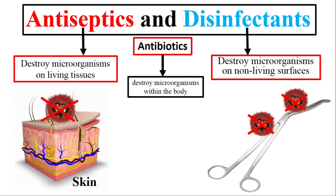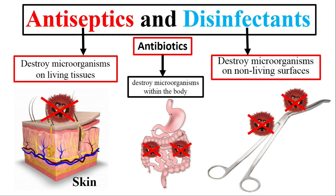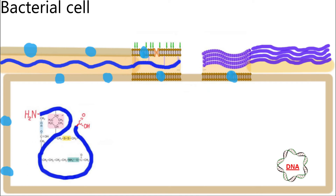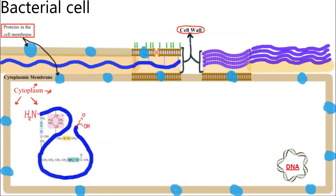Alcohols can destroy fungi, viruses, and bacteria. I will show their mechanism of action on a bacterial cell first. The components of the bacterial cell are cell wall, cytoplasmic membrane, cytoplasm, proteins embedded in the cell membrane, proteins inside the cell, and DNA.